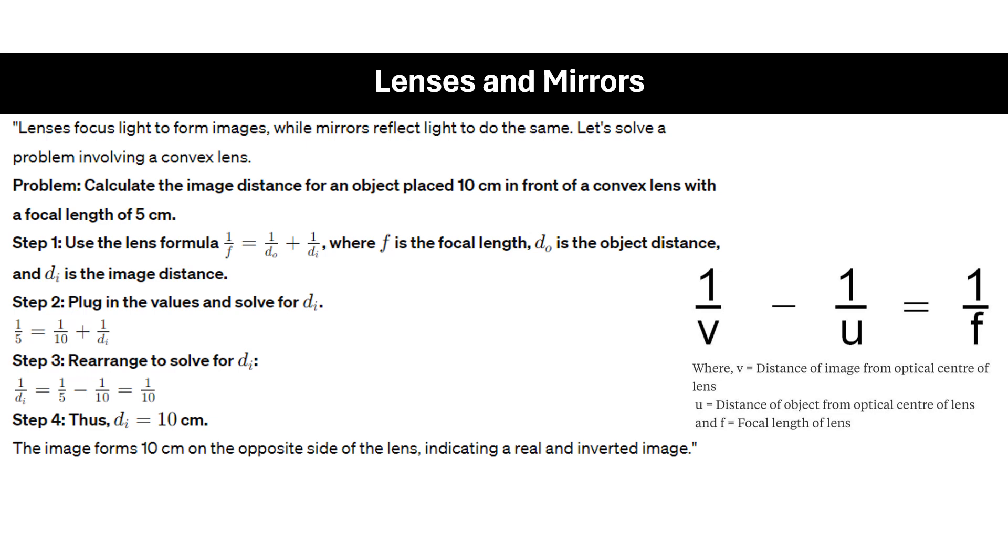Since it's a convex lens, the image will be formed on each side of the lens, so it indicates a real and inverted image. A convex lens looks like this at both sides, while a concave lens will look like this. You can use these representations if you are making a diagram for this particular set of problems.